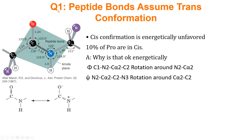To really understand backbone conformation in proteins we have to understand the peptide bond. The peptide bond is usually in the trans conformation. Looking at the side chains: in trans, one amino acid's side chain is pointing down and the other is pointing in the opposite direction. The reason for this is sterics — we don't want side chain atoms bumping up against each other, causing unfavorable steric interactions.